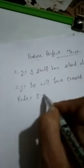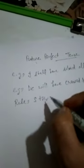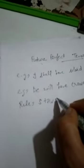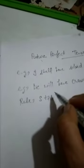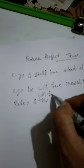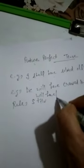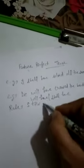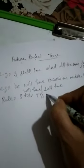The rule of future perfect is: Subject + helping verb. In present perfect we use has/have, in past perfect we use had, and in future perfect we use will have or shall have, plus the third form (past participle), plus object.